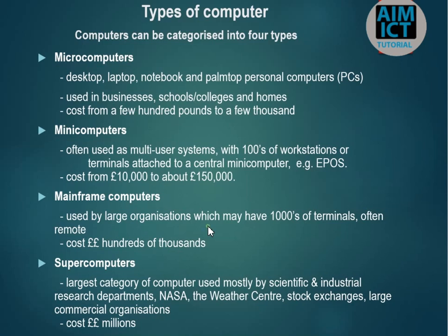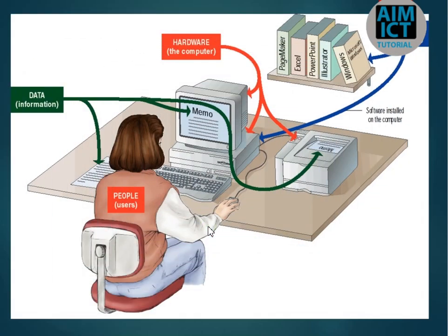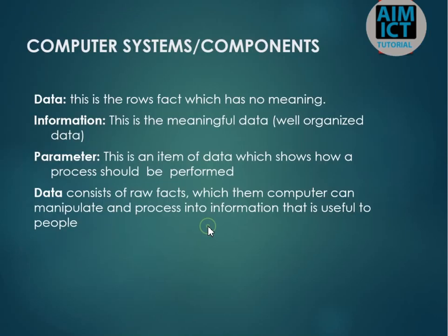Now we look at users who feed data into computers and receive information at the end. Data means raw facts — information which has not been processed. Information means data which is well organized and has been processed — that is what we call information.